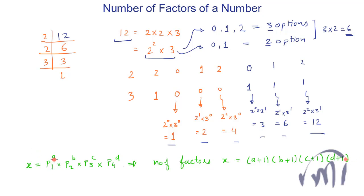When you have p1 to the power a, you actually have a+1 choices for p1 — it can appear 0 times, once, twice, thrice, and at maximum a times. So you have a+1 choices for p1, b+1 choices for p2, c+1 choices for p3, and so on. That is why the number of factors is the product of all these options. So now let us keep this formula and check it with one more example.